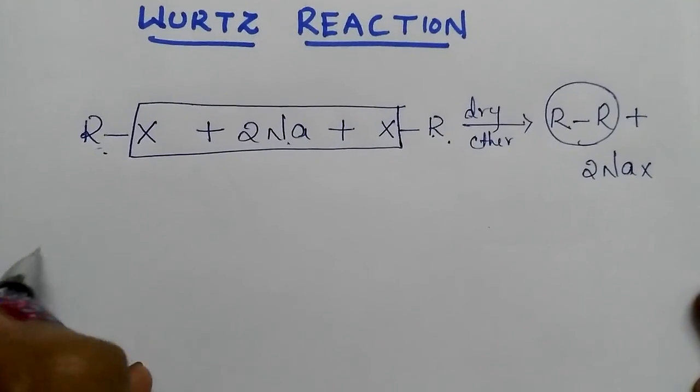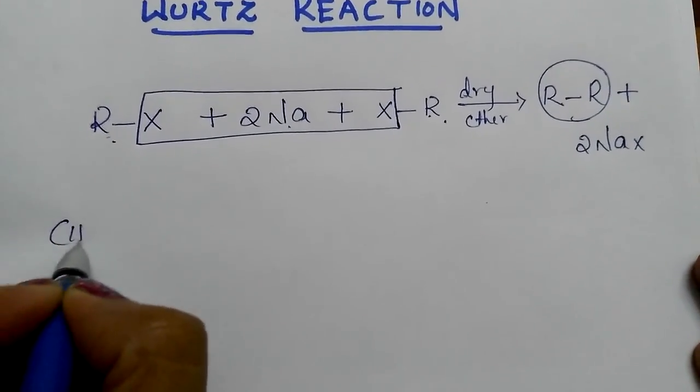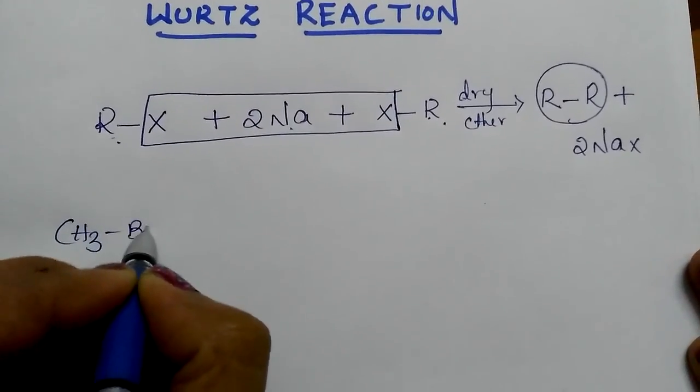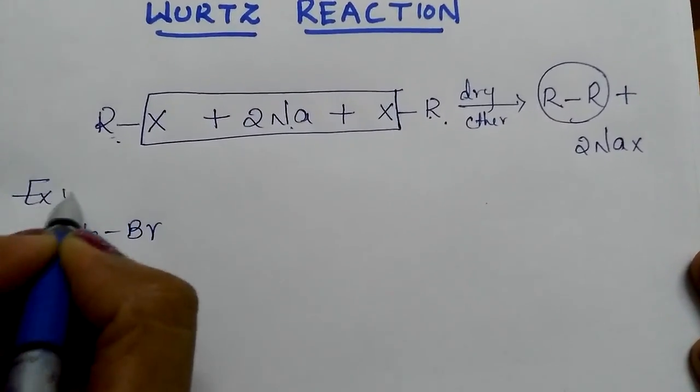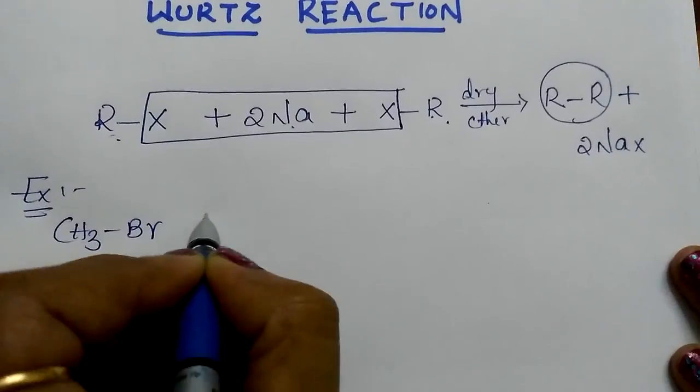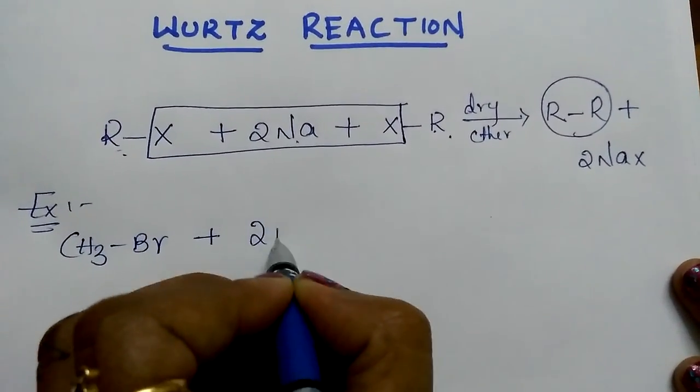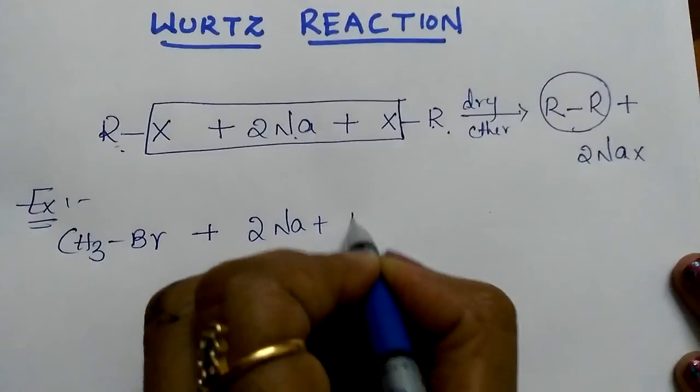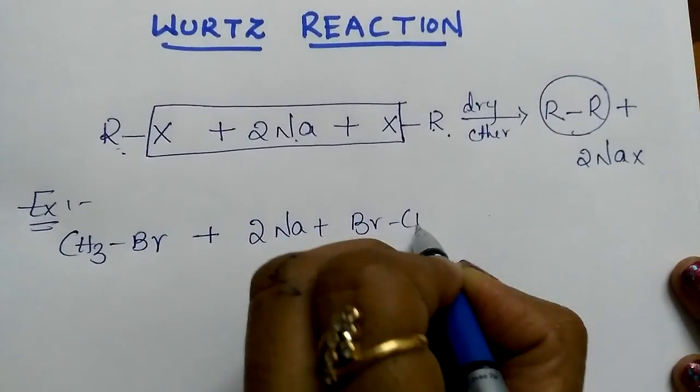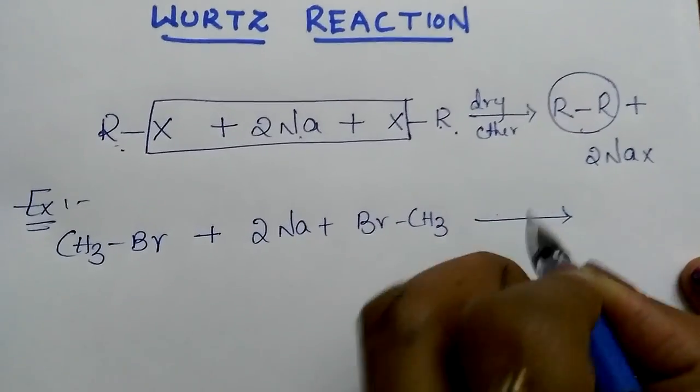Let us take one example: methyl bromide. 2 moles of methyl bromide reacts with metallic sodium in the presence of ether.